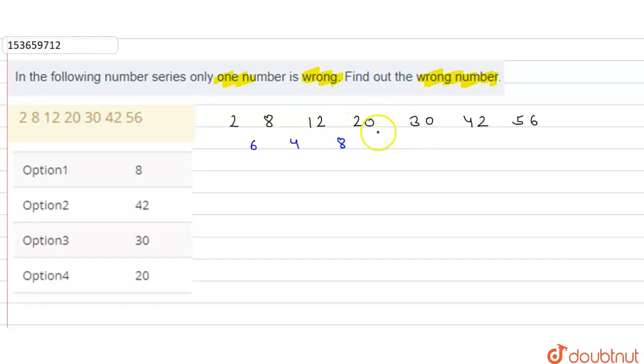Next, what is 30 minus 20? Here, the difference is 10. 42 minus 30, how much will it be? 12. 56 minus 42, how much will it be? 14. Now, we see the difference from this pattern.